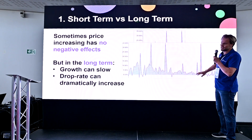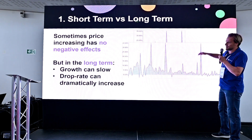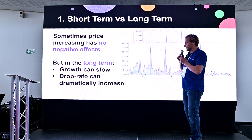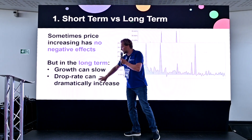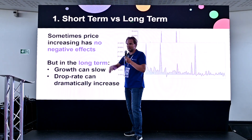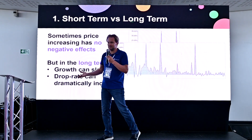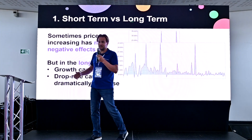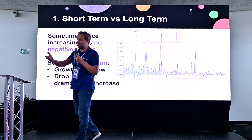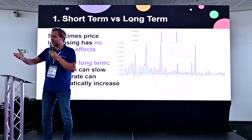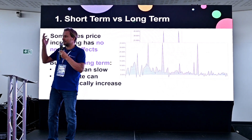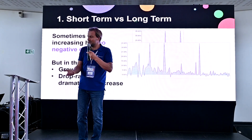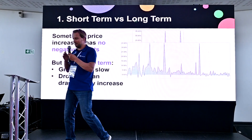When you increase another product's price, MRR also grows. But there are two main issues: the drop rate can be very high because people dislike the new price, and growth can slow significantly. Earlier, people came for $5; now you've increased to $7 — fewer people come for $7 compared to $5.